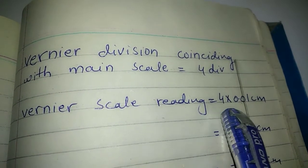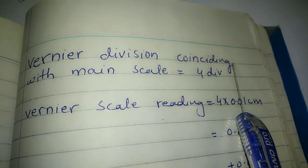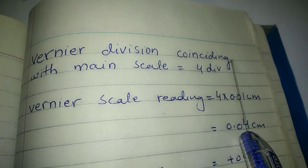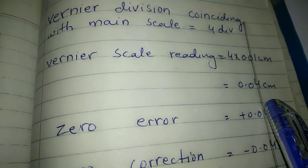4th division. We multiply: 4 into 0.01 cm equals 0.04 cm.